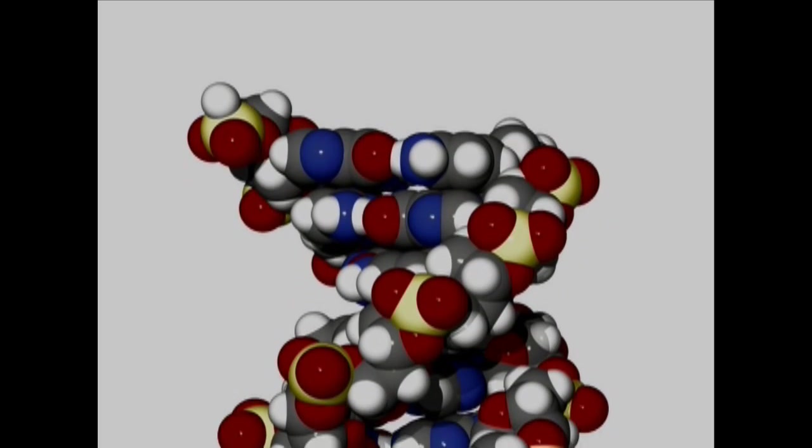The order of these pairs down the chain results in a code that controls protein production, and thereby determines cellular function.